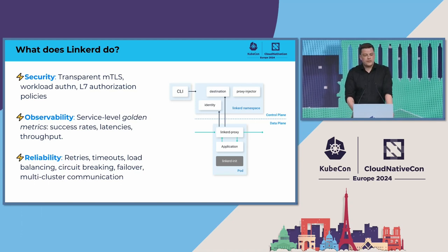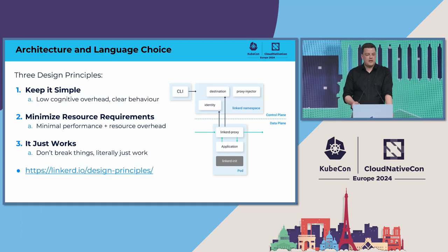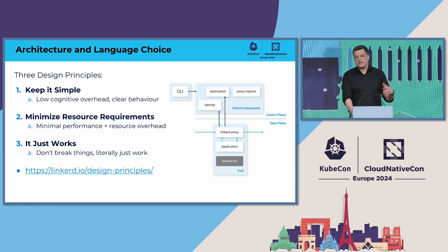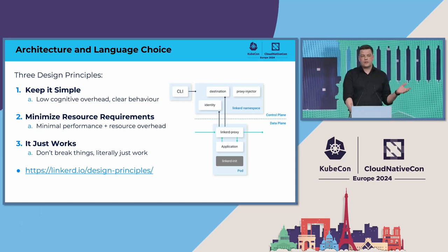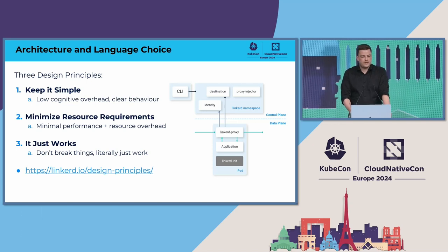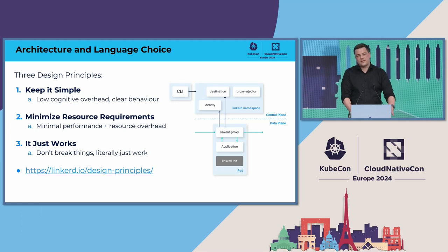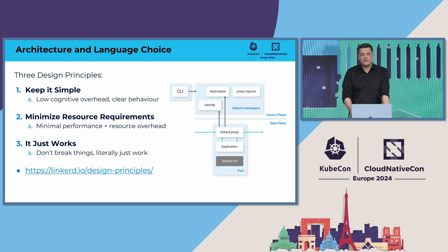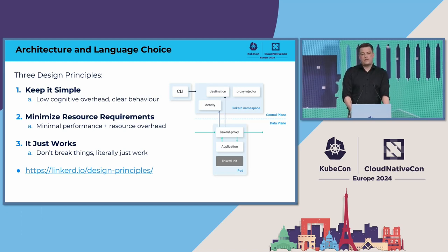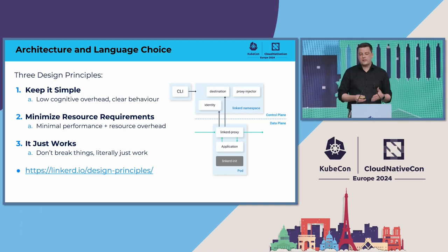Linkerd follows three design principles that are interesting here. The first one is keep it simple — you don't want too much cognitive overhead. Then you have minimized resource requirements. Since Linkerd uses the sidecar model, you want the sidecars to be very efficient with less overhead. And the third one is: it just works — you want it to be everywhere and keep running all the time.